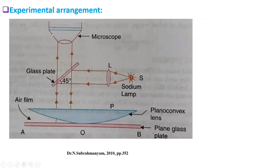See this experimental arrangement. This monochromatic source of light, sodium lamp, lens L. This light from this monochromatic source is incident on this lens. And this lens makes the light parallel.